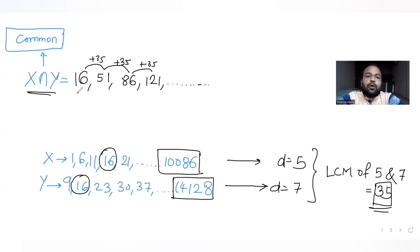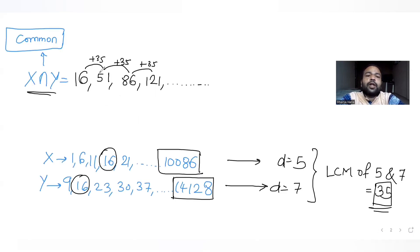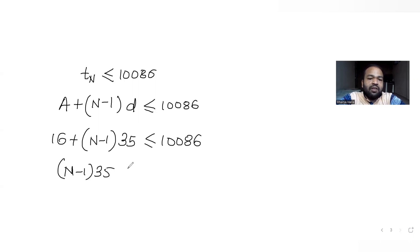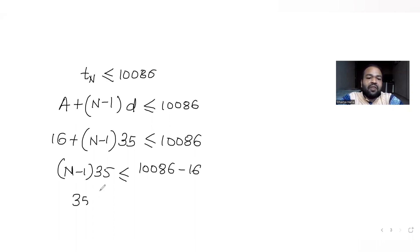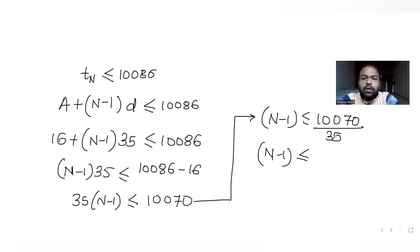The first term in the common list is 16 and the common difference is 35 — the LCM of the two differences. Solving: (n minus 1) times 35 is less than or equal to 10,086 minus 16, which is 10,070. Dividing 10,070 by 35 gives approximately 287.7. So n minus 1 is less than or equal to 287.7.